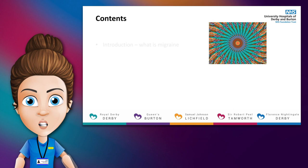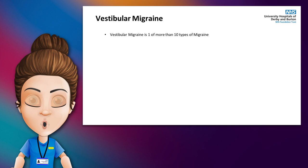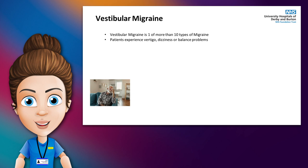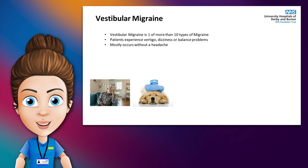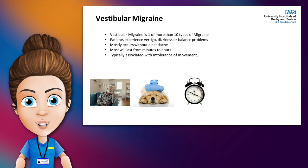In this video we're going to cover what a migraine is, what causes a migraine, the triggers for migraine and the treatments including medication. Vestibular migraine is one of more than 10 types of migraine. It's a migraine in which people experience vertigo, dizziness or balance problems. This type of migraine mostly occurs without the typical headache and can vary in duration but most will often last from minutes to hours.